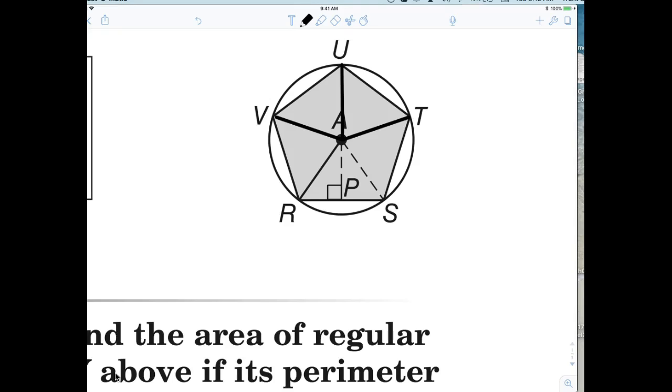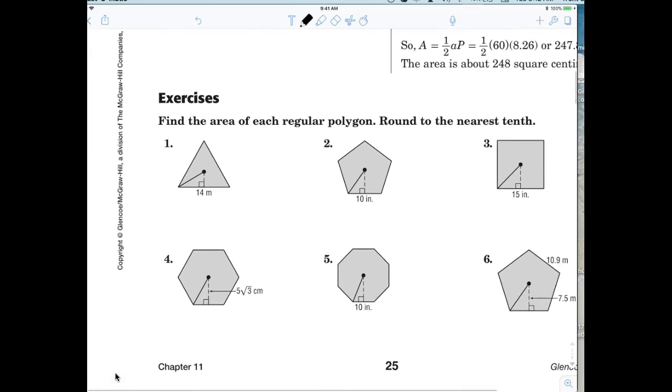All right. So if I said, find the area of a regular hexagon, you would just say, break the hexagon down into what? Six triangles. Find the area of one triangle, and multiply by six. All right. That's how we're going to approach these problems. All right. And it's very, very easy.